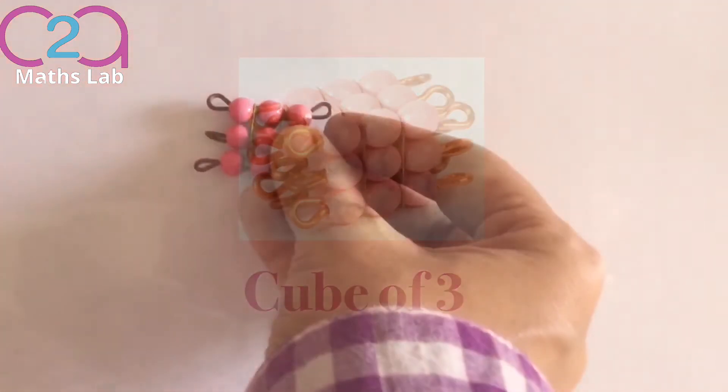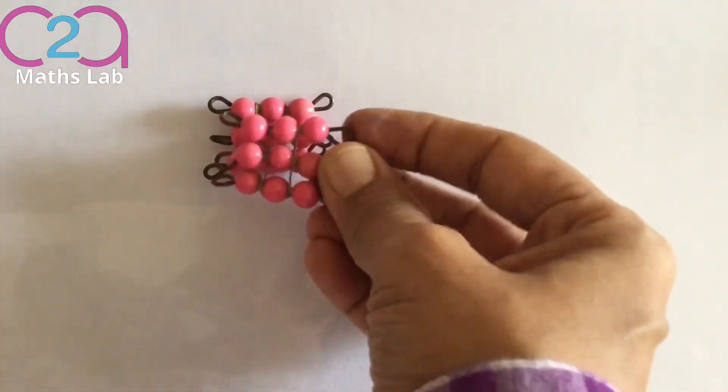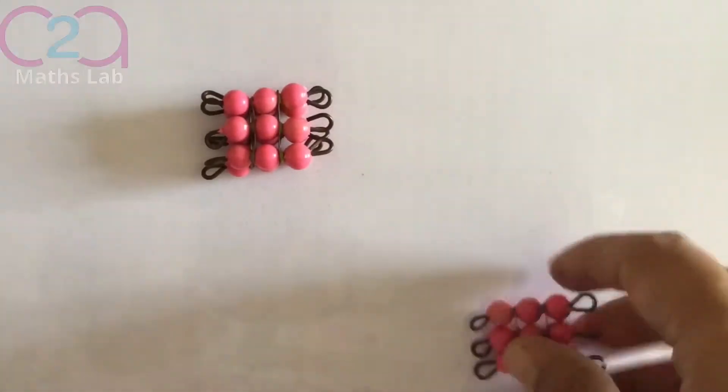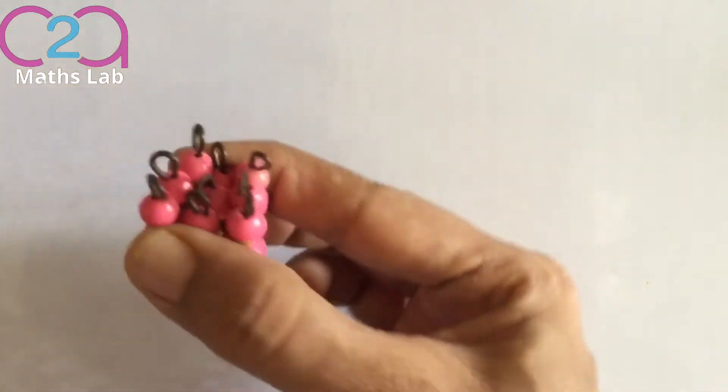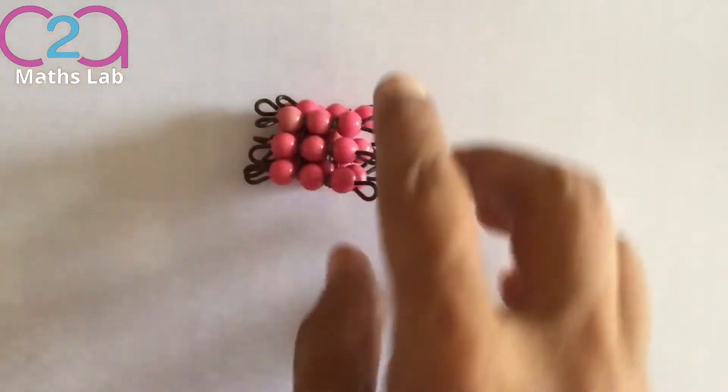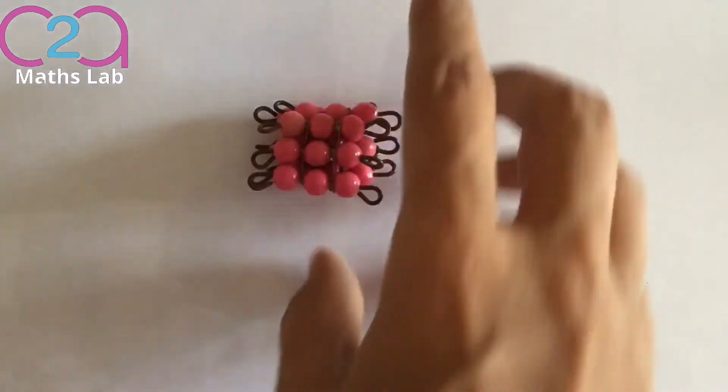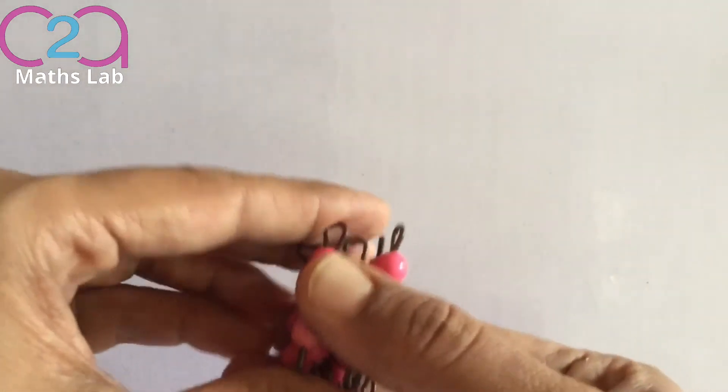Let's make a cube of 3. So first square, second square, and the third square. So this has become a cube. A cube has 3 dimensions: 3, 3, and 3 on this side.